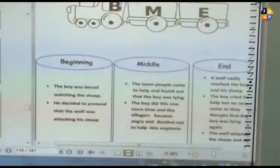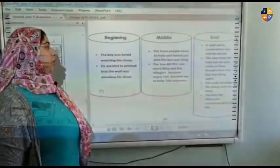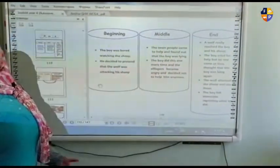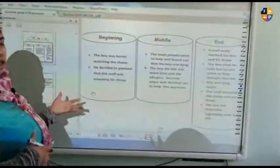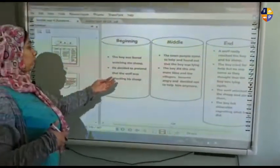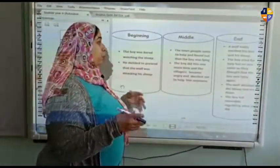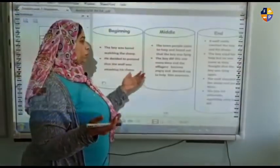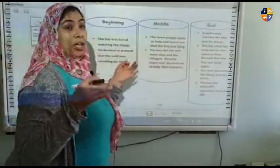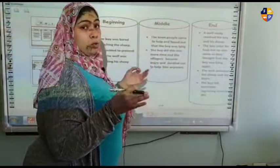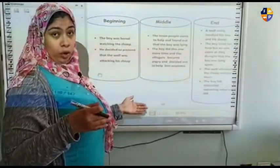Now we are going to talk about the beginning, middle, and end of the story. The beginning is easy: the boy was bored watching the sheep and decided to pretend that a wolf was attacking. The middle is where the villagers came to help and found out that the boy was lying. And the end is when a real wolf reached the boy and ate his sheep. You have to read it all carefully.